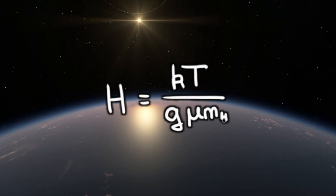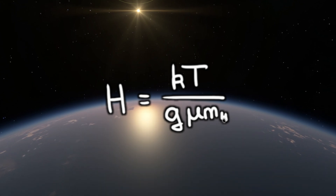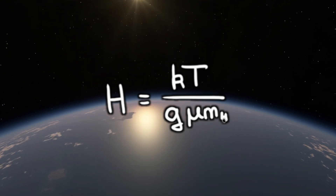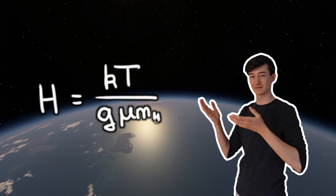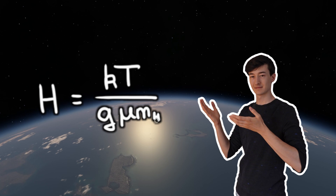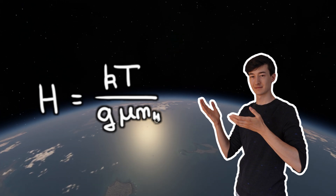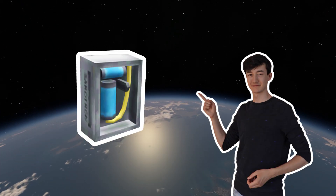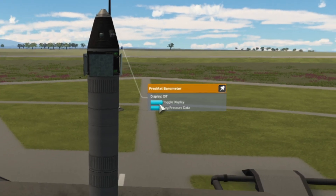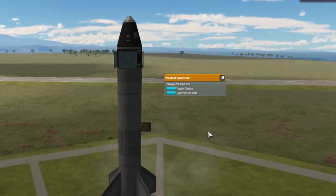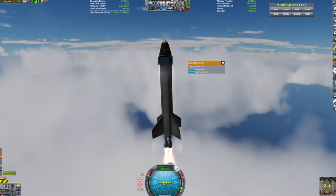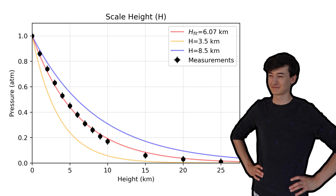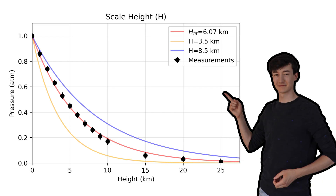Knowing the equation for the scale height, we can determine mu for the planets in KSP, because we know the masses of these planets, their radii, and their surface temperature using the 2HOT thermometer. The last thing we need is the scale height itself, which we can determine using the PressMAT barometer. If we measure the pressure at multiple heights in the atmosphere, we can see how fast it drops, which is linked to the scale height. That is exactly what I did in KSP, and for Kerbin the black data points show my measurements, with the red fitted line giving a scale height of about 6 km.